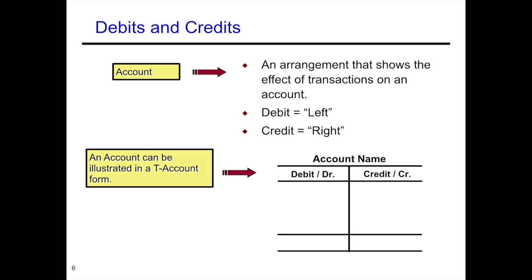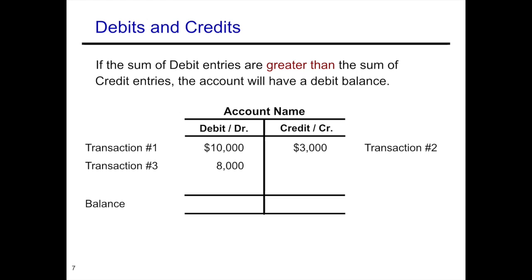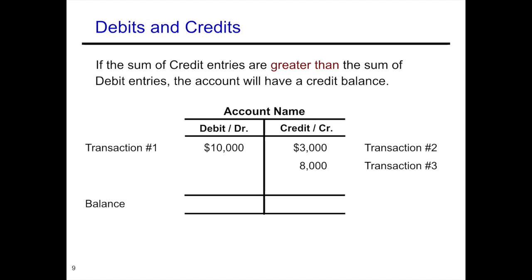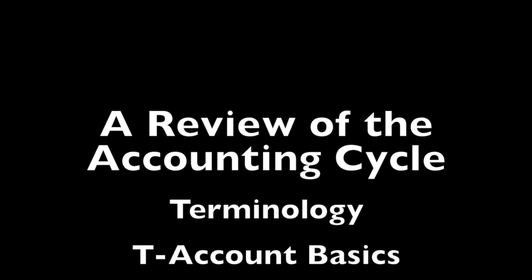So let's look at an example of what this would look like if we actually put some numbers on it. Here we have three transactions that have happened to this particular account. Transaction number one, two, and three. We can see that 10,000 plus 8,000 is more than 3,000 — it actually leaves us with what we call a debit balance, because the debit side is $15,000 higher than the credit side. So therefore we call this a debit balance. If the reverse had happened and we had 8,000 and 3,000 on the credit side and 10,000 on the debit side, we would now say that we have a $1,000 credit balance.